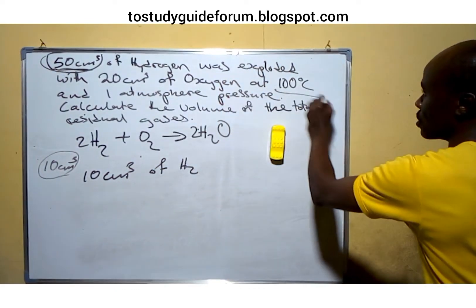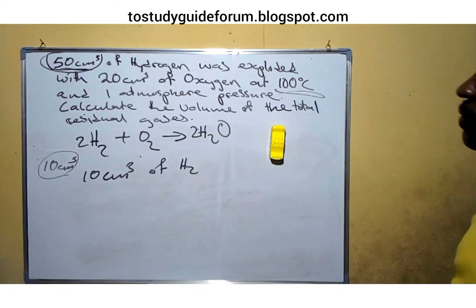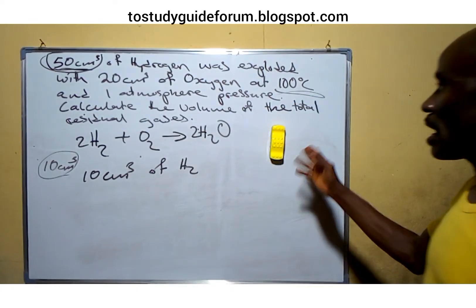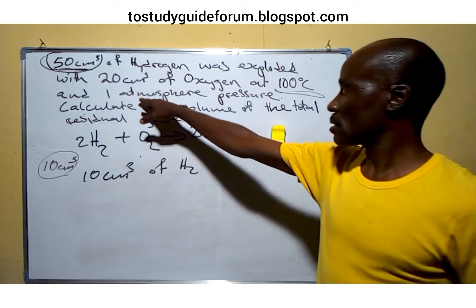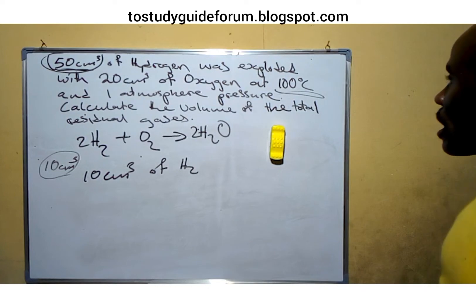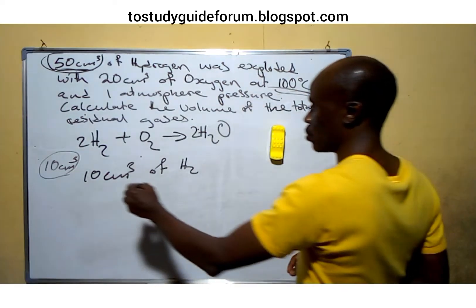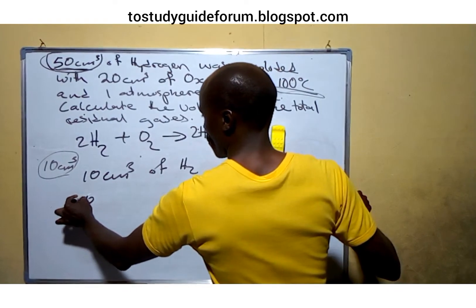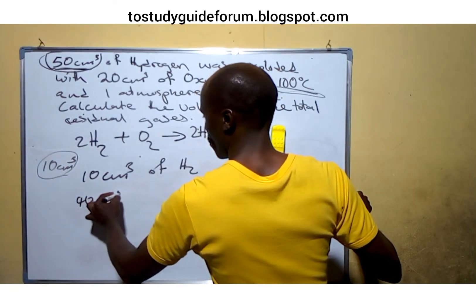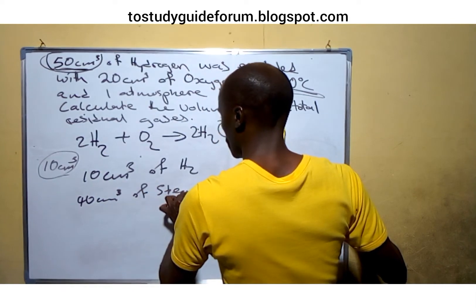Then the steam. Look, this is 100 degrees Celsius, that means water is in form of steam. That means it's a gas state at this temperature and pressure, 1 atmosphere. Water remains to be steam. So that means since we produce 40 cm³ of steam.